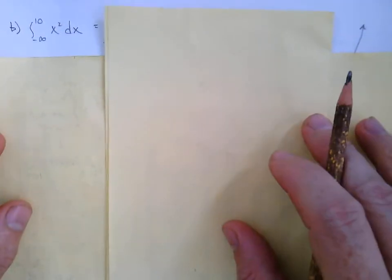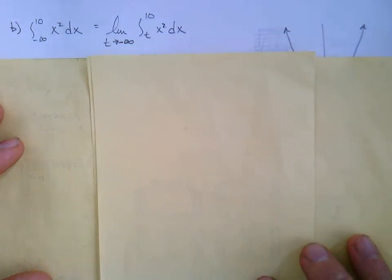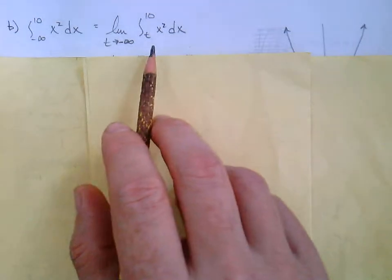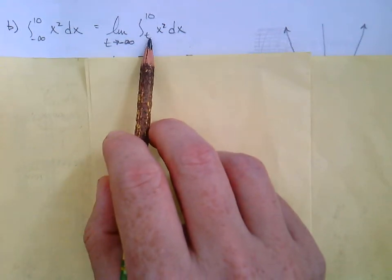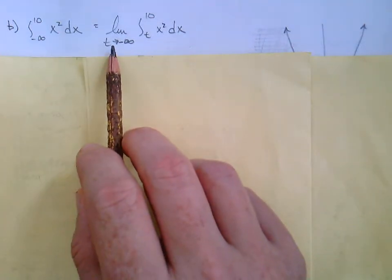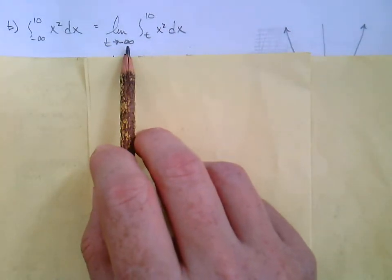That last integral required integration by parts, but not everything is going to need that. Some of these are fairly straightforward and a lot quicker. Let's take a look at the integral from negative infinity to 10 for x squared dx. So our first step is to rewrite it in a more proper form. I recommend just writing the limit as t approaches negative infinity, and then you go from t to 10.